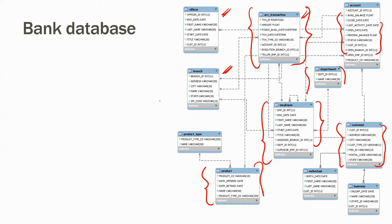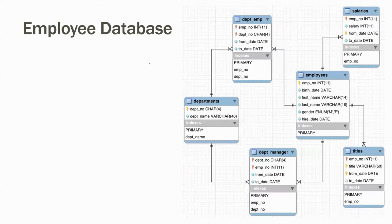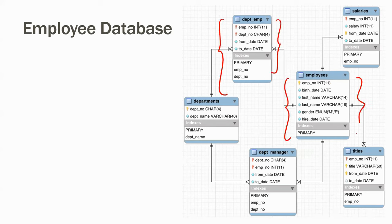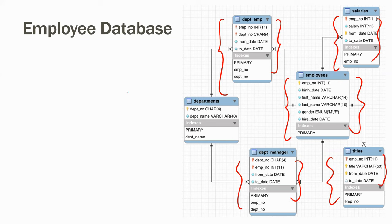Only specific people should get access to certain tables — employees table, products table, department-wise information, account-related information, customer-related information. All of that is organized in different tables. During the SQL course we are going to get into all these databases and see the details — how tables are attached, how we can extract information.